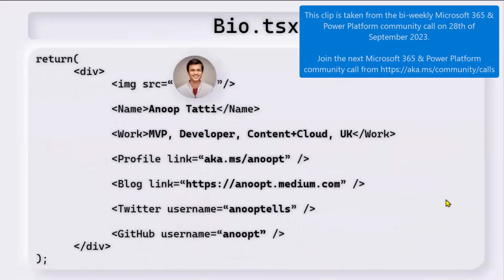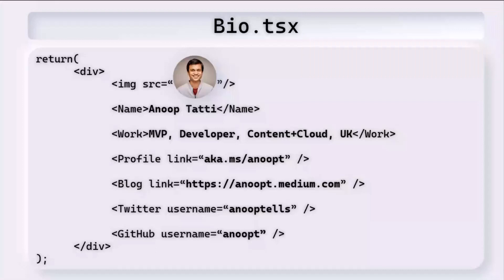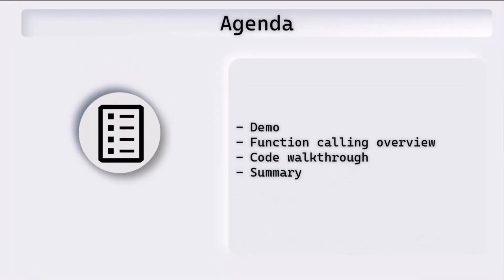My name is Anup. I'm an MVP in the Microsoft 365 development category. I work at a company called Content and Cloud based in the UK. There are links to my profile, blog, Twitter, and GitHub. The agenda for today is we'll start with the demo first, then we'll take a look at the OpenAI function calling feature, then we'll have a look at the code, and we'll conclude.